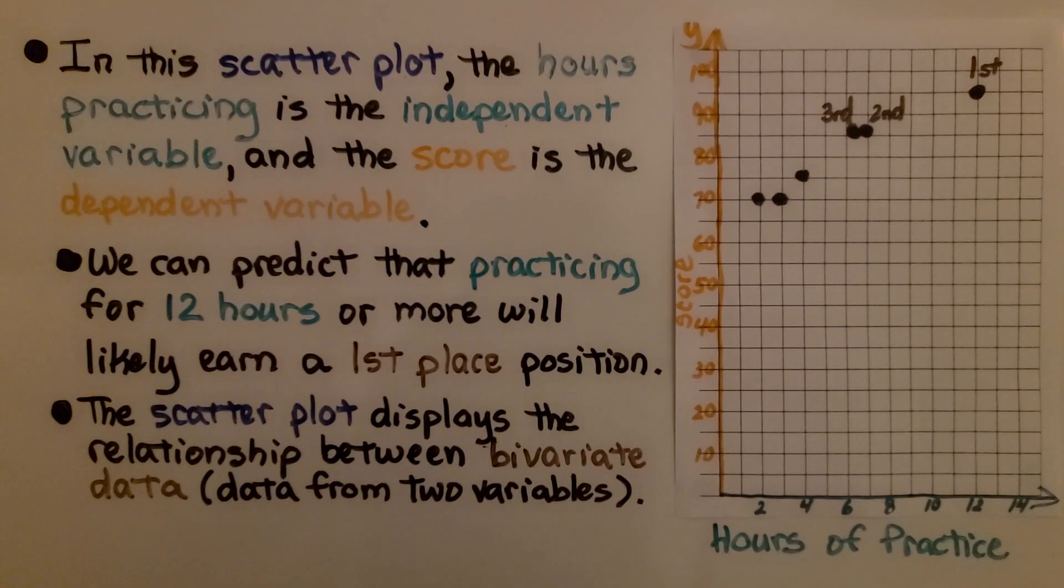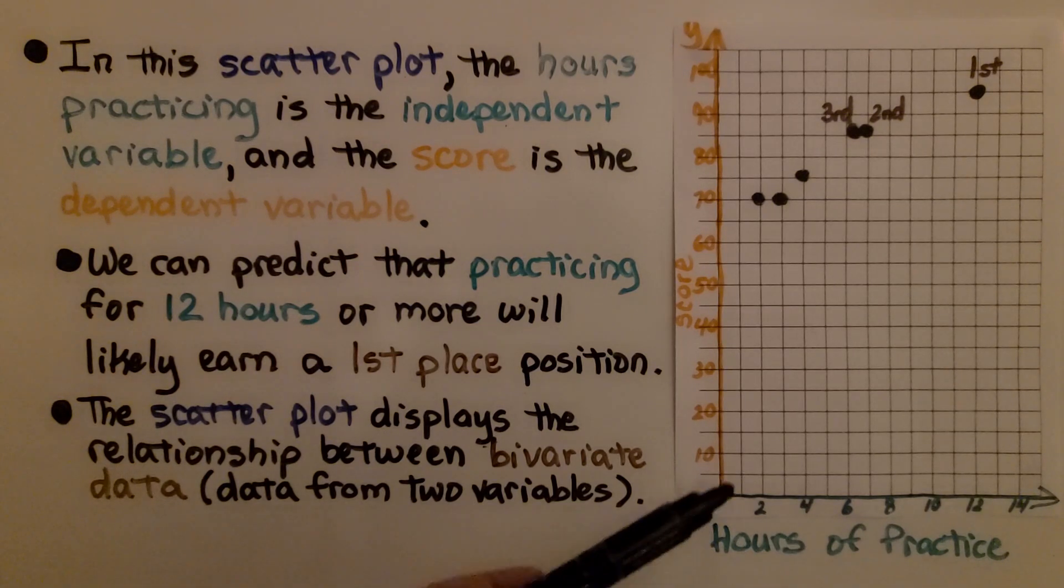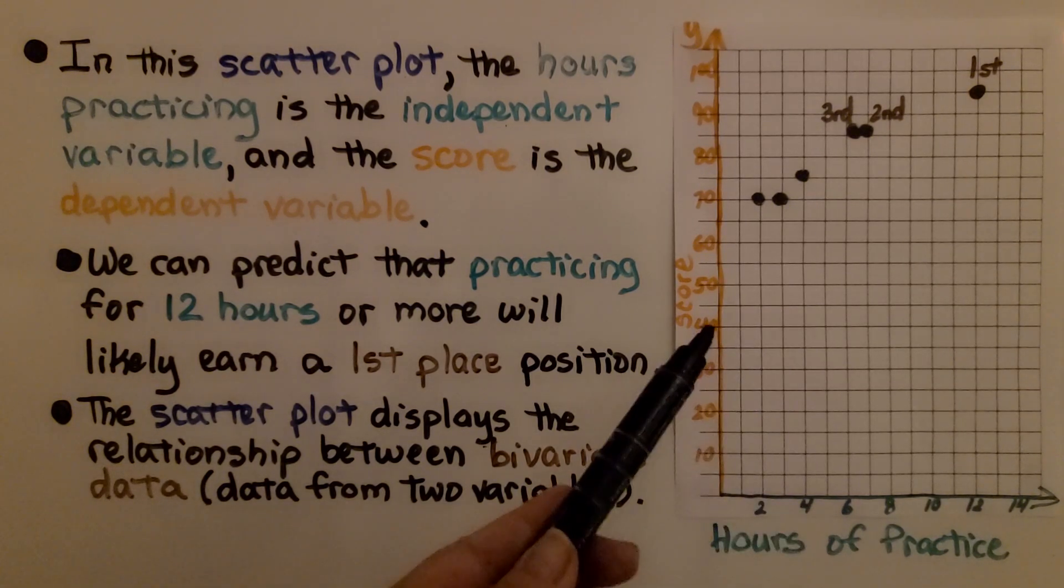In this scatter plot, the hours practicing is the independent variable and the score is the dependent variable. We can predict that practicing for 12 hours or more will likely earn a first place position. The scatter plot displays the relationship between bivariate data, that's data from two variables, the data from the hours of practice and score.